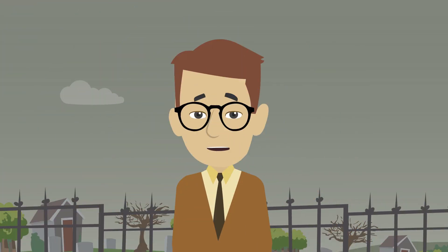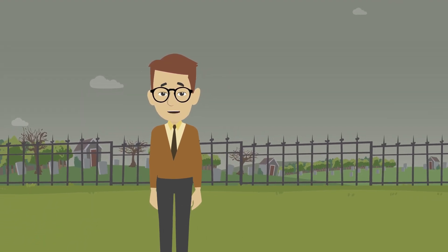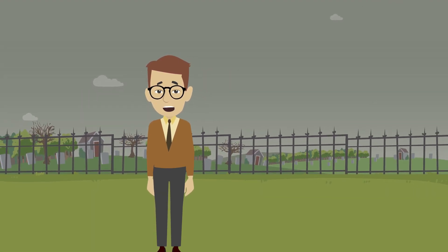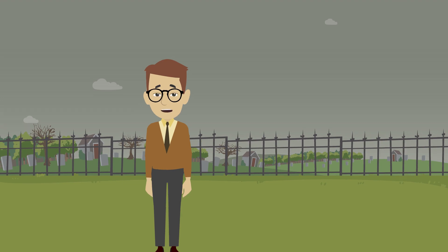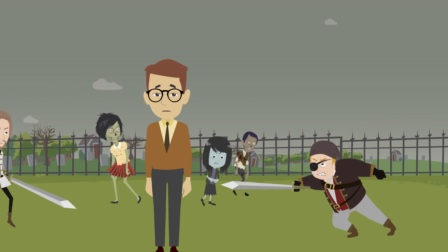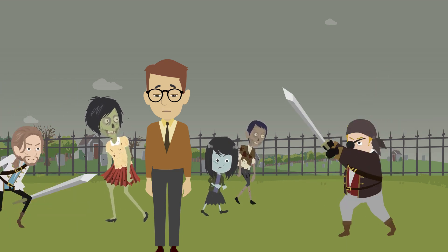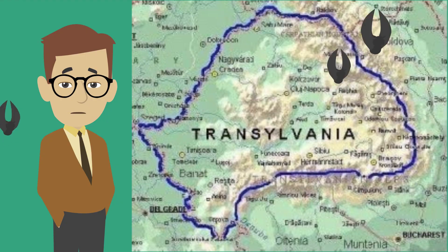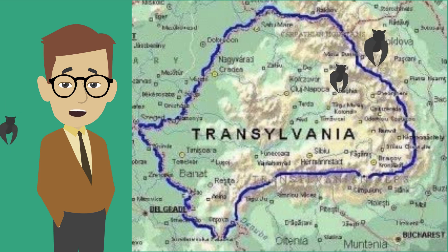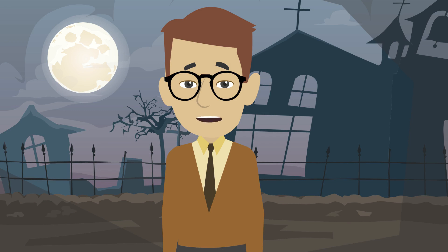One final note before we wrap up: the federal government isn't the only one that taxes different types of taxpayers differently. A lot of states do as well, so you have to look carefully at the tax laws of the various states that might look to take a cut of your profits, weighing the pros and cons of how to structure the business. If you expect to do business internationally, the rules get even stickier and the tax planning can get even more intense. But the basic concept is the same.